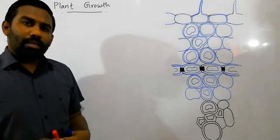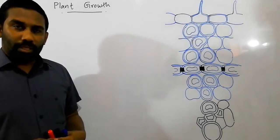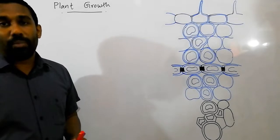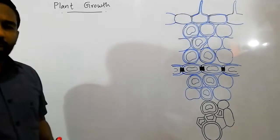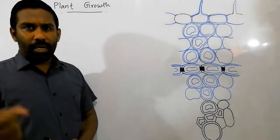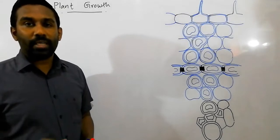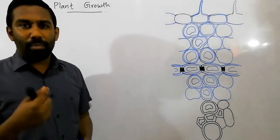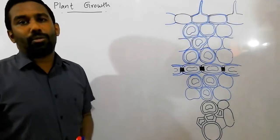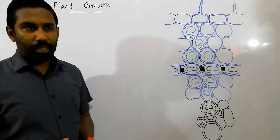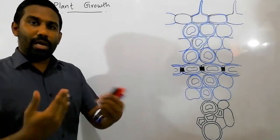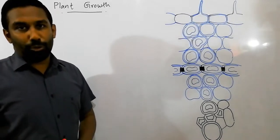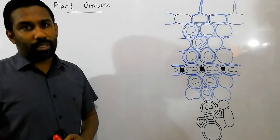When discussing plant tissues, we said meristems involve in primary growth. Meristems contain continuously dividing cells known as initials. Those initials continuously divide by mitosis and add new cells to the plant. The new cells added are elongated, then differentiate and produce permanent tissues. That's how the growth process happens.